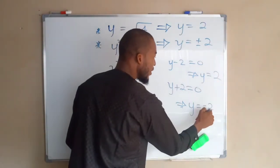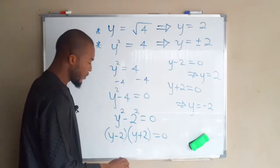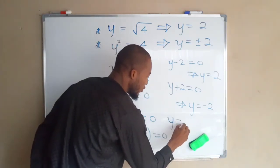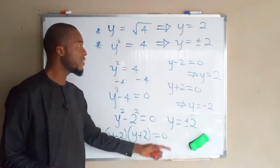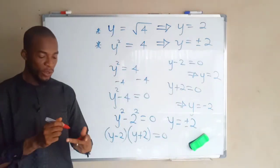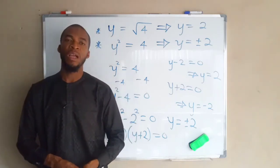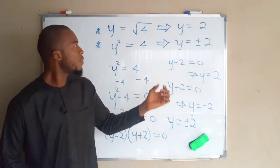This one is positive while this one is negative. So therefore we say from here y equals plus or minus two. Hence proved.